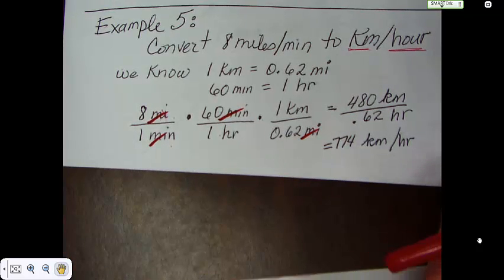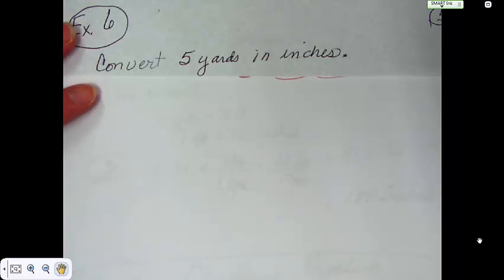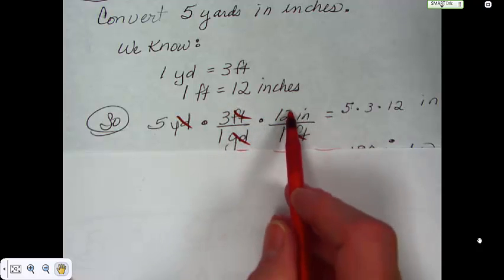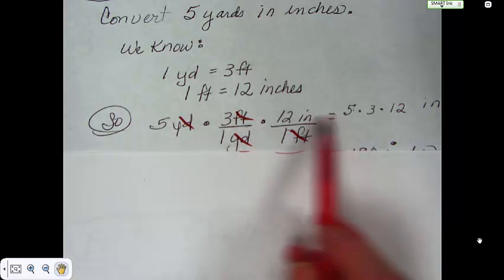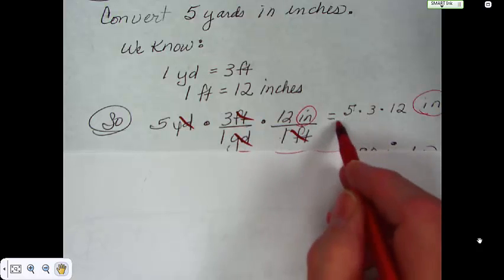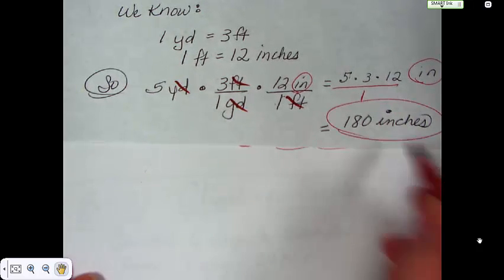Let's convert five yards into inches — two conversions, pretty easy. We know that one yard is three feet, and one foot is 12 inches. We take five yards times 3 feet per one yard, times 12 inches per one foot. Yards cancel with yards, feet cancel with feet. Five times three times 12 inches, with one times one on the bottom. Five times three is 15, and 15 times 12 is 180 inches.